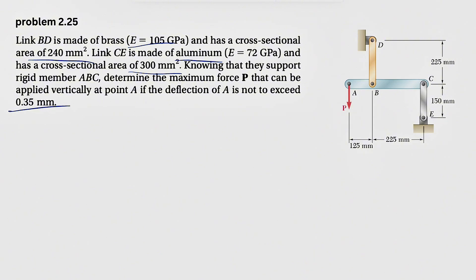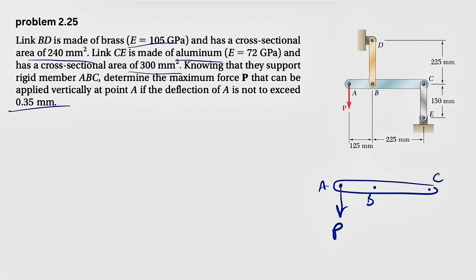So what we're going to do is find the deformation at points A, B, and C. Before that, let's start with the free body diagram first to find the forces. We have member ABC with force P applied, and we're going to have forces at points B and C as well.